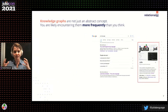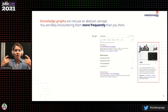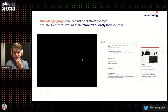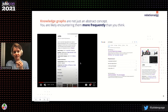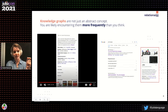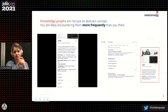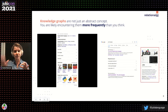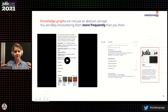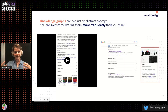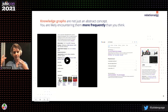You might think this is abstract, but knowledge graphs actually appear in your life more frequently than you think. A simple example: when you search for something on Google, you get a knowledge panel on the right-hand side. If I search for 'Julia,' I get information not just from one source — some from Wikipedia, some about books to read, things people also search for. Google collects information from across the web using its knowledge graph search capability to produce that condensed summary.